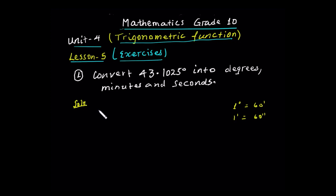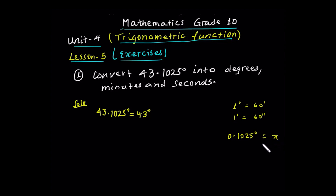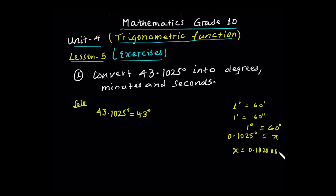Let's see the solution. The whole number part of the degree is the degrees value. So let's see — we have 43 as the whole number of degrees, and the decimal part is 0.1025 degrees. Multiplying by 60 minutes, so x is equal to 0.1025 times 60 minutes over 1 degree.